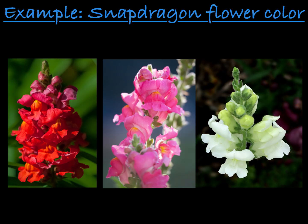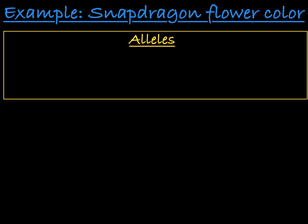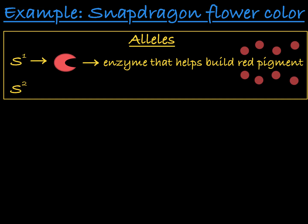A good example of incomplete dominance is found in the pigmentation of snapdragon flowers. The gene associated with the production of flower color has two alleles — let's call them S1 and S2. The S1 allele encodes a functioning version of an enzyme that helps produce red pigment. The S2 allele produces a non-functional version of this enzyme, which is unable to contribute to the process of pigment production.